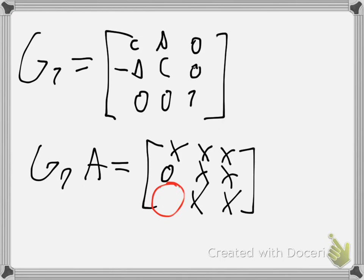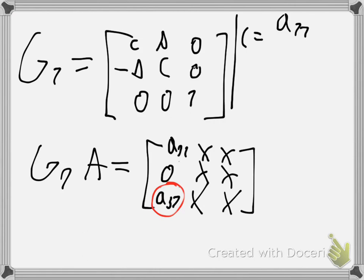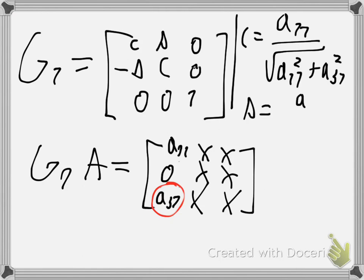Then you do the same thing again, now for the element A(3,1). Your cosine will be given by the element at the top, so A(1,1) over the square root of A(1,1) squared plus the element you want to eliminate squared. Sine is the opposite: the element you want to eliminate over the square root of that element squared plus the top element.